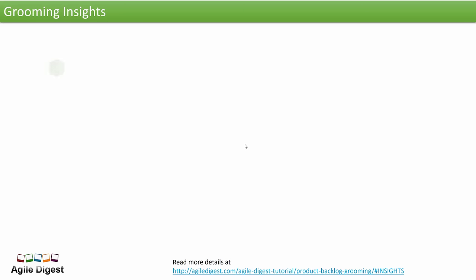What do we do in grooming? We clarify requirements. The developer talks about the story, goes through what exactly the requirement is, what is the acceptance criteria, what is the description, whether there is a wireframe attached, and discusses in detail to understand and clarify what needs to be developed or tested. We also look at INVEST and 3C.